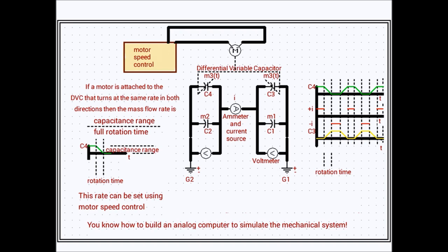So if the motor is attached to the differential variable capacitor, we call it DVC, it turns at the same rate in both directions. Then we can calculate the mass flow rate that we were simulating as the capacitance range of the differential variable capacitor divided by its full rotation time. This rotation time can be seen in the waveform as the area between the dotted line. This is the time where the capacitance is sloping up or down. And that is the full rotation time.